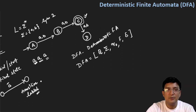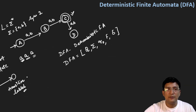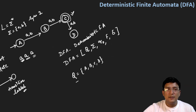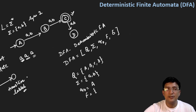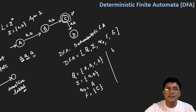Let us define each component using our automata. Q, the set of all states, is {A, B, C, D}. Σ, the input alphabet set, is {a, b}. Q0, the start state, is A. F, the set of final states, is {C} — note that a finite state machine can have more than one final state, but at least one must exist. δ is the transition function.